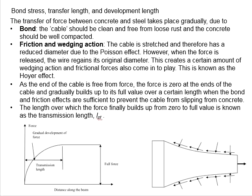To ensure good bond between concrete and steel, the tendon should be clean and free from loose rust, and the concrete should be well compacted. There will be friction and wedging actions between the tendon and concrete.